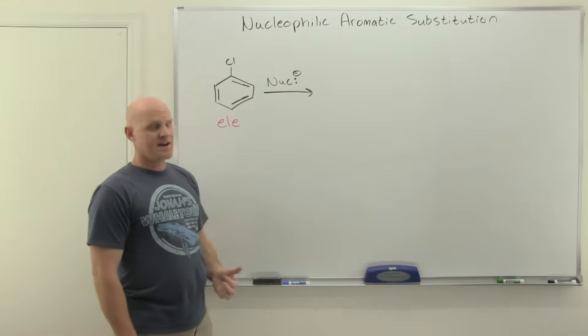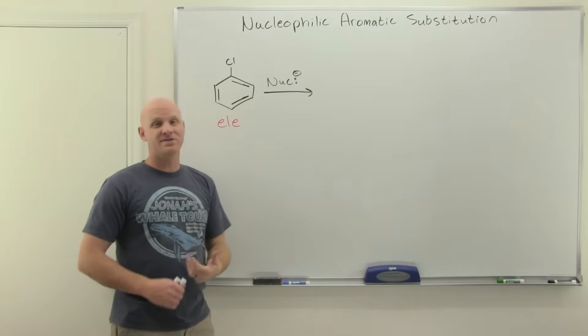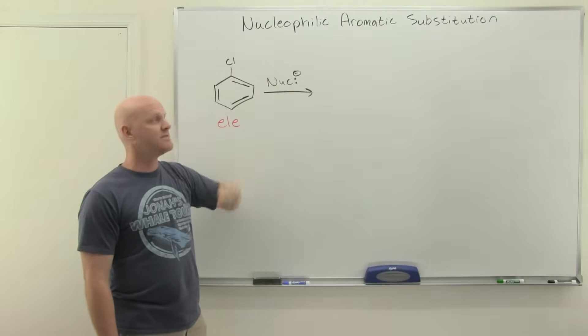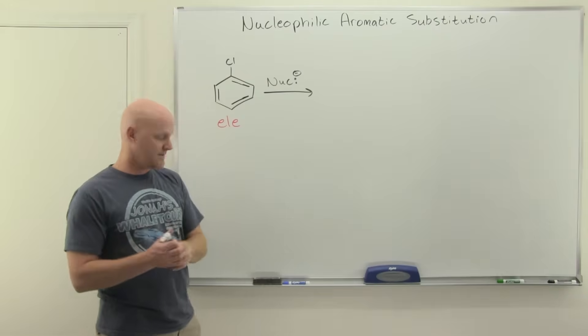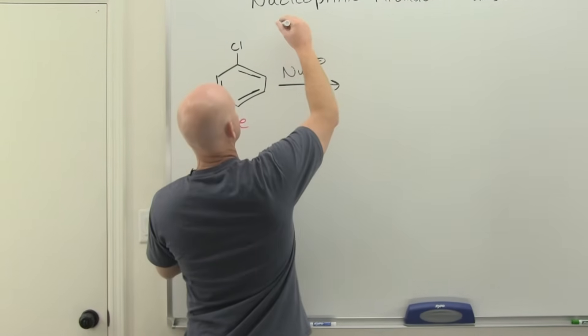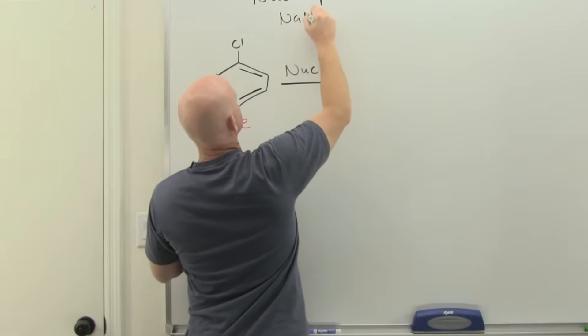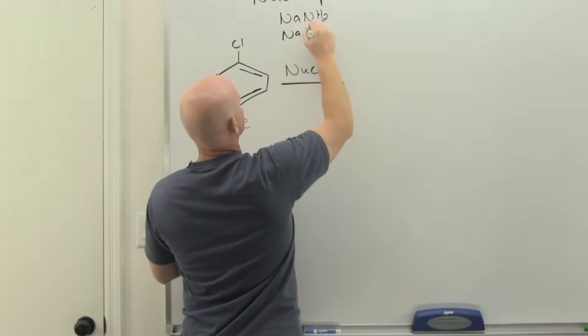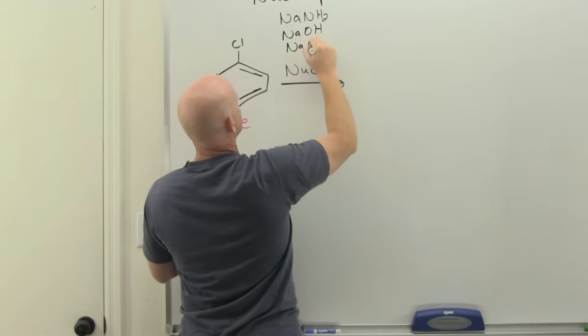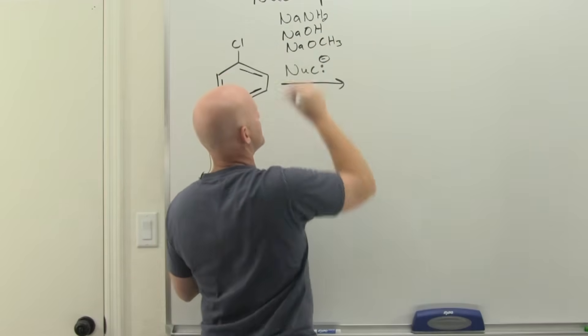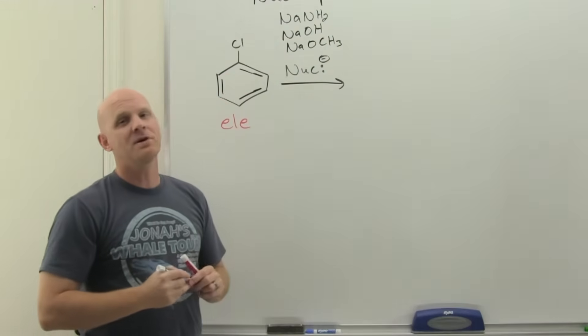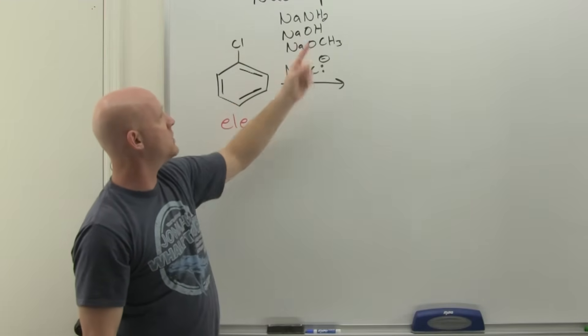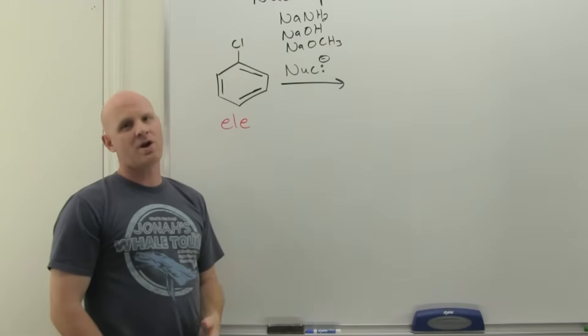We need a pretty strong nucleophile in this case. Just like benzene is pretty unreactive as a nucleophile, it's also not the strongest electrophile either, so we're going to need a pretty strong nucleophile, and the vast majority of the ones we look at are going to have a negative charge. Some common examples here would be like NaNH2 where you've got the amide ion, maybe NaOH or NaOCH3, so either hydroxide or an alkoxide, something with a negative charge typically. In this case, you might replace the Cl with NH2, an OH, or an OCH3, any of those are options.